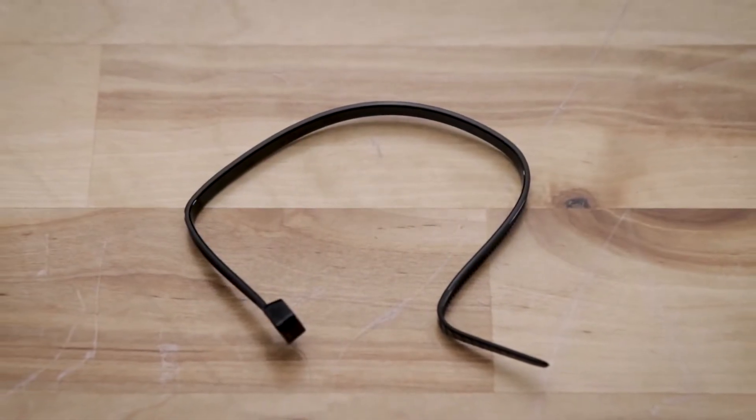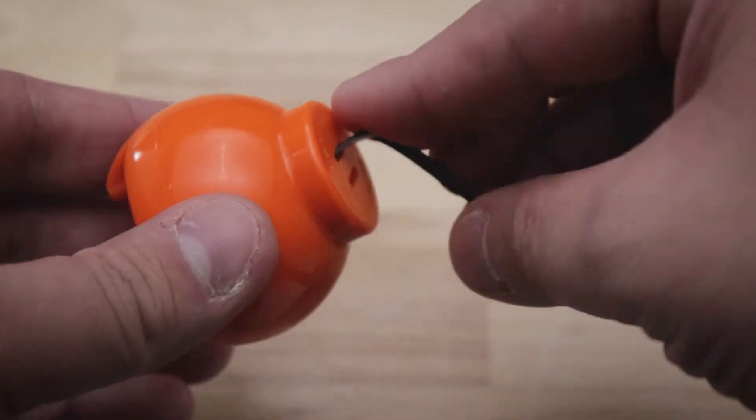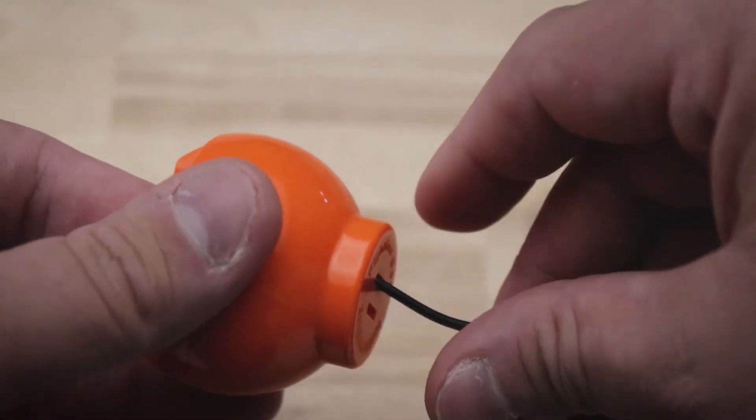It comes with a handy UV-protected zip tie to attach the trailer ball to the trailer chain so you can't misplace it.